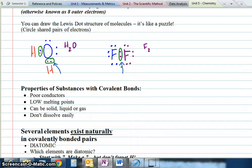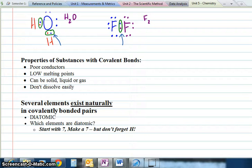The properties of covalent bonds are opposite to ionic bonds. They're poor conductors with low melting points. They can be solid, liquid, or gas, and don't dissolve easily.